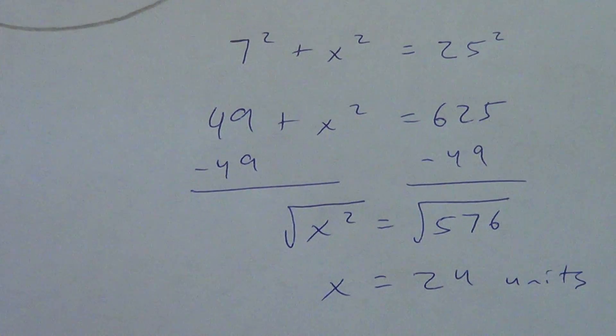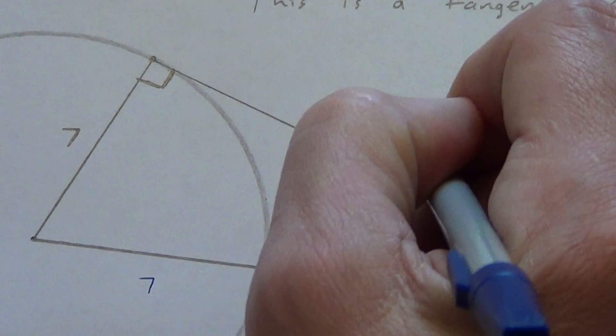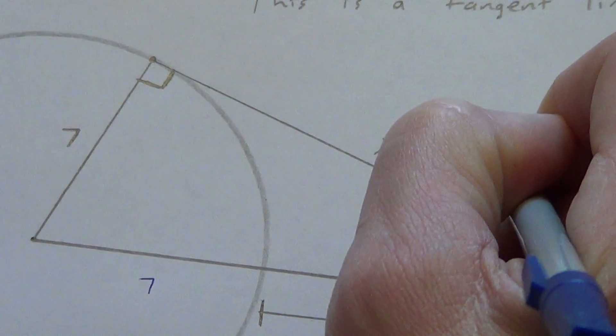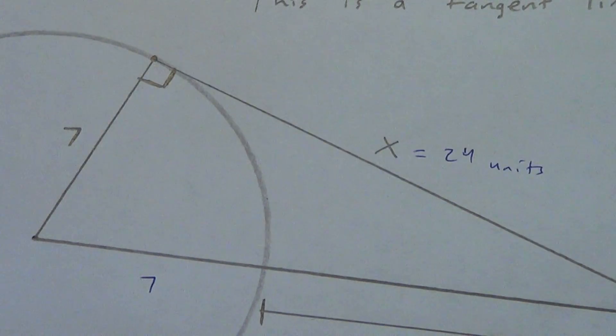So, we're done. 24 units. It's pretty easy. So, we just solve for x. x has to equal 24 units. That one's pretty simple.